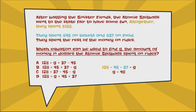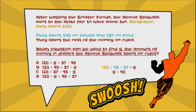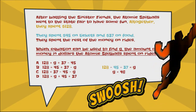What we could do is take the total, $128, and subtract what they spent on tickets, then subtract what they spent on food, and we'd get the leftover — which tells us how much they spent on rides. So 128 minus 45 minus 37 gives us 46. That means $46 is the amount they spent on rides, but that's not actually what the problem is asking for.